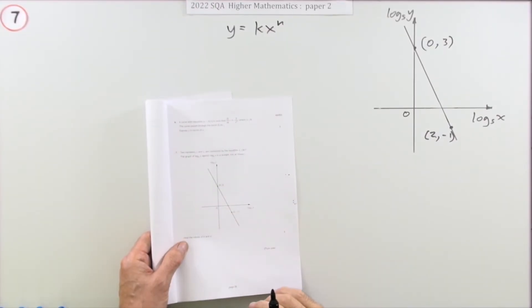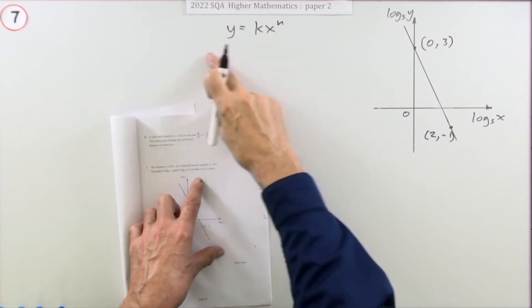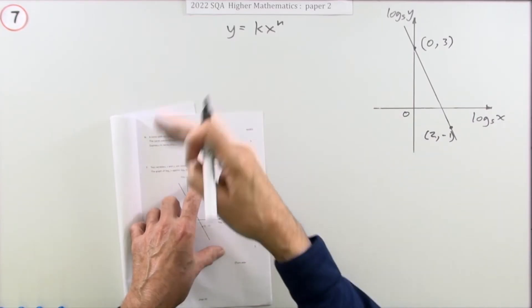Question 7 from the 2022 Higher Maths Paper 2, a 5 mark question. It's that log graph one, the one about the experimental data, because what it says is you suspect, although it doesn't say that there,